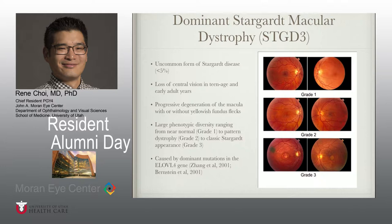Autosomal dominant Stargardt is clinically indistinguishable from the autosomal recessive form, characterized by loss of central vision in the first and second decades of life, progressive macular atrophy with or without yellowish fundus flecks, and a large phenotypically diverse range from near-normal to pattern dystrophy to a classic Stargardt appearance. This disease entity was first described by three independent research groups as resulting from dominant mutations in the ELOVL4 gene.